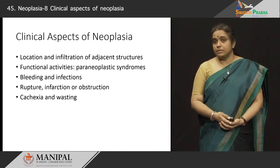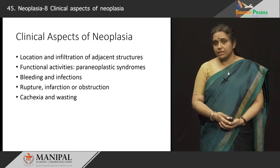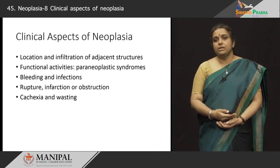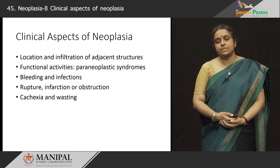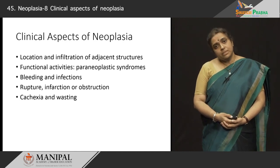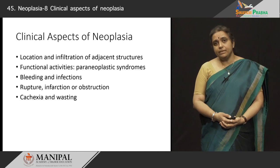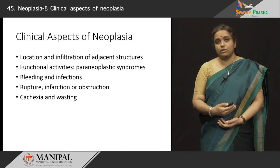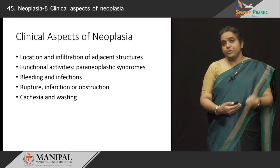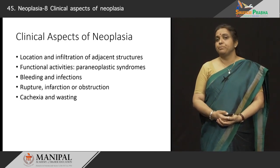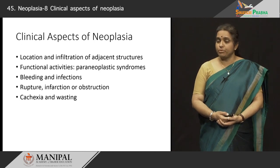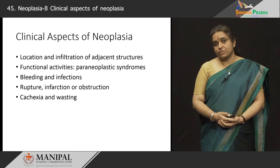Paraneoplastic syndromes are some syndromes peculiar to tumors that cannot be explained by the location or the activity of the original tissue. We will go into some detail in subsequent slides. Sometimes tumors cause problems because of bleeding and infection. For example, if the tumor erodes into the bronchus or into a blood vessel in the lung, it can cause a lot of bleeding and hemoptysis. Tumors can also cause problems because they can get infected. Leukemias can cause massive suppression of normal bone marrow cells, making patients more prone to all kinds of infections.